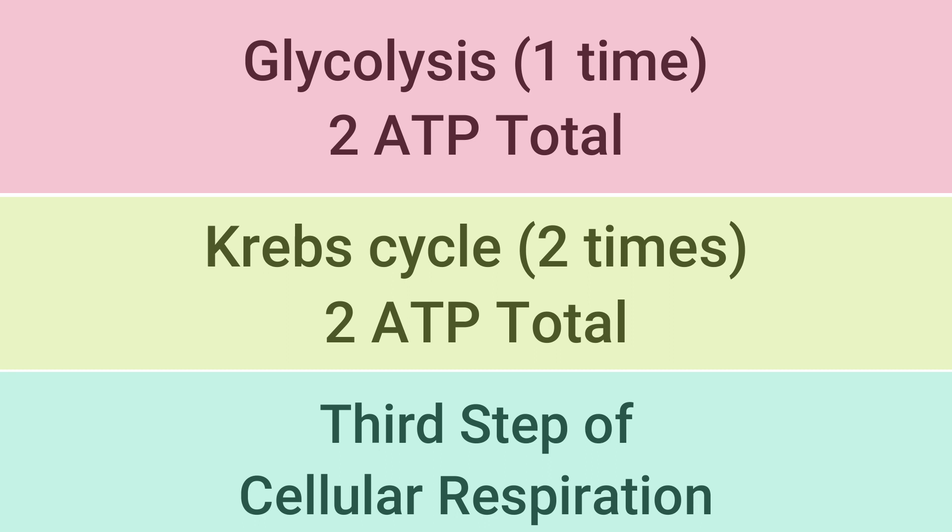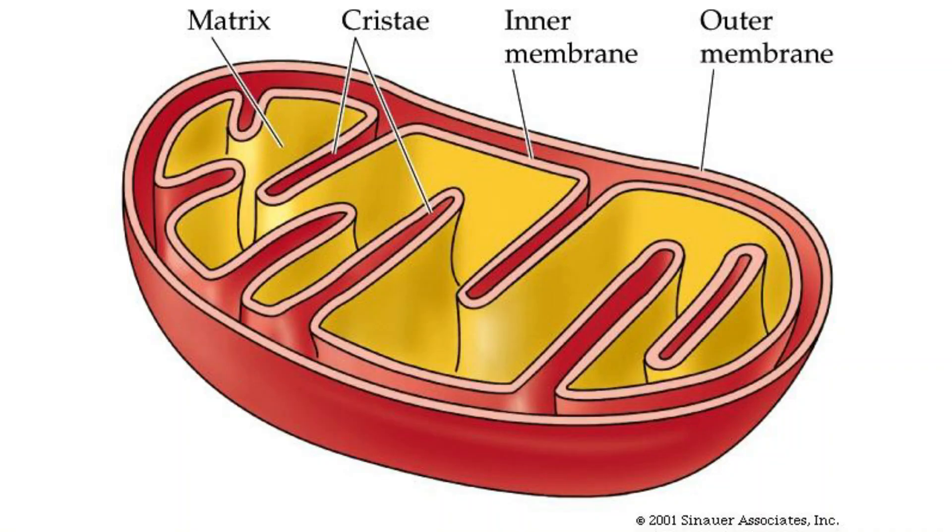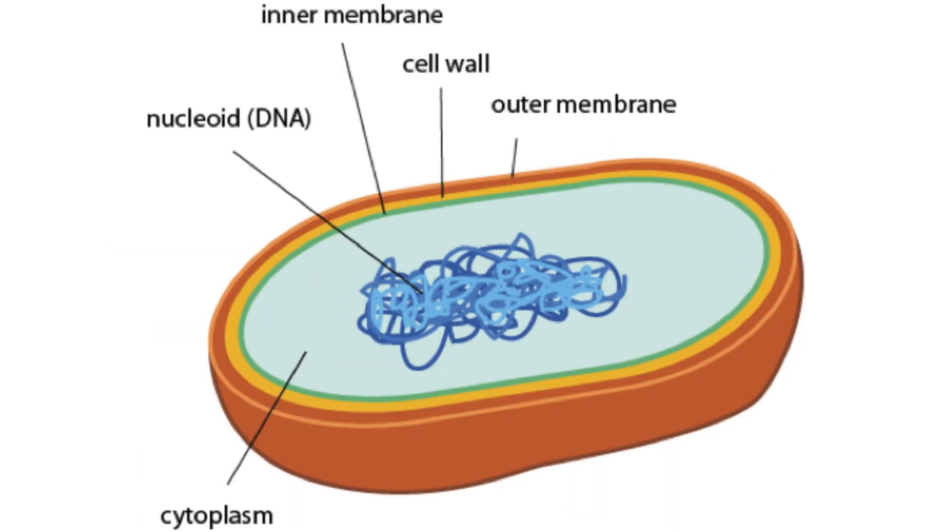So far, we've only produced four ATP total, including glycolysis and Krebs, out of over 30 ATP per glucose molecule. In eukaryotes, both pyruvate oxidation and the Krebs cycle take place in the mitochondrial matrix, which is the inside space of the mitochondria organelle. However, in prokaryotes, both of these processes take place in the cytoplasm of the cell.